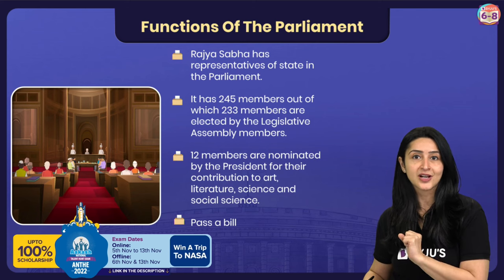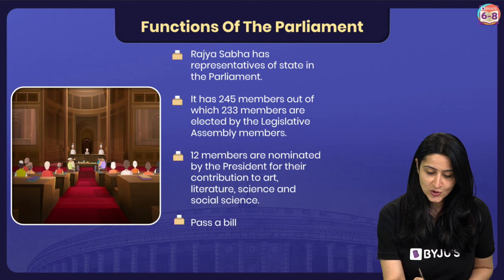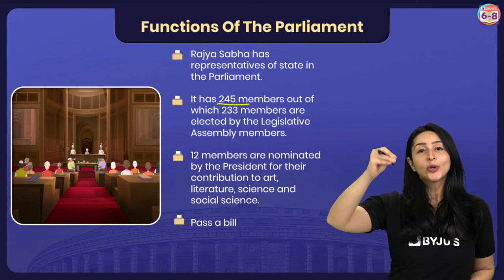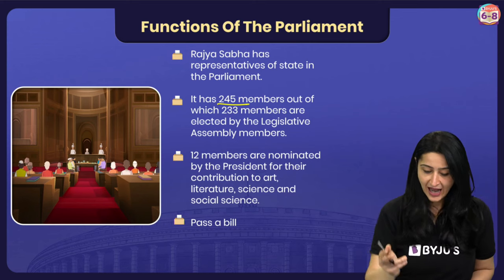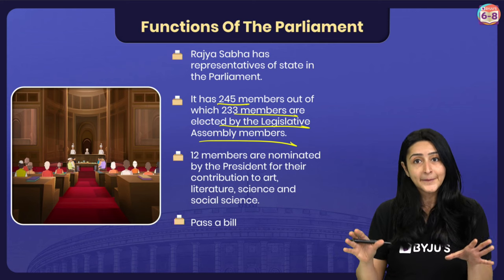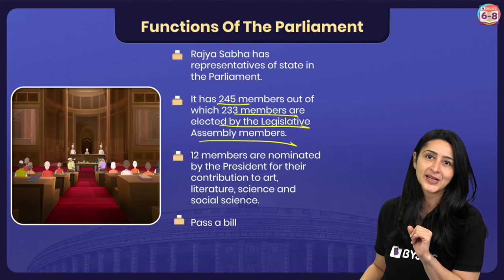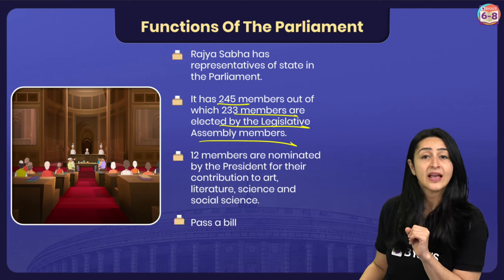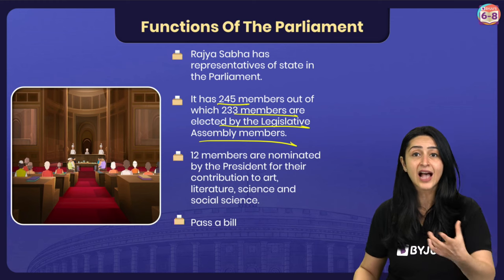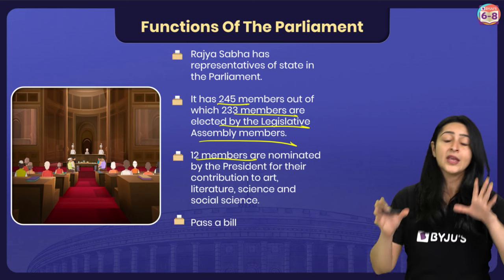The Rajya Sabha has representatives of states in Parliament. Naturally, bigger states like Uttar Pradesh, Maharashtra, or Karnataka have more members, while smaller states like Goa, Uttarakhand, and Sikkim have fewer members. The total strength of the Rajya Sabha is 245 members, out of which 233 are elected by the legislative assembly members. The remaining 12 are nominated by the President of India for their contributions to fields like art, literature, science, and social science.